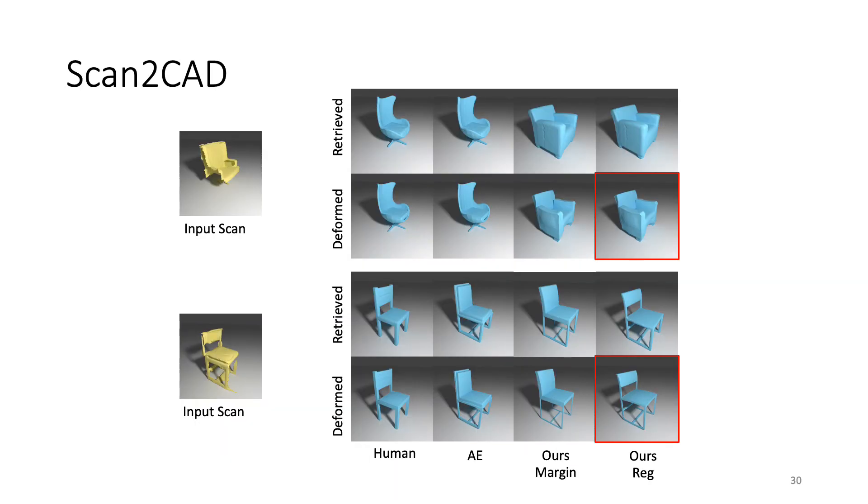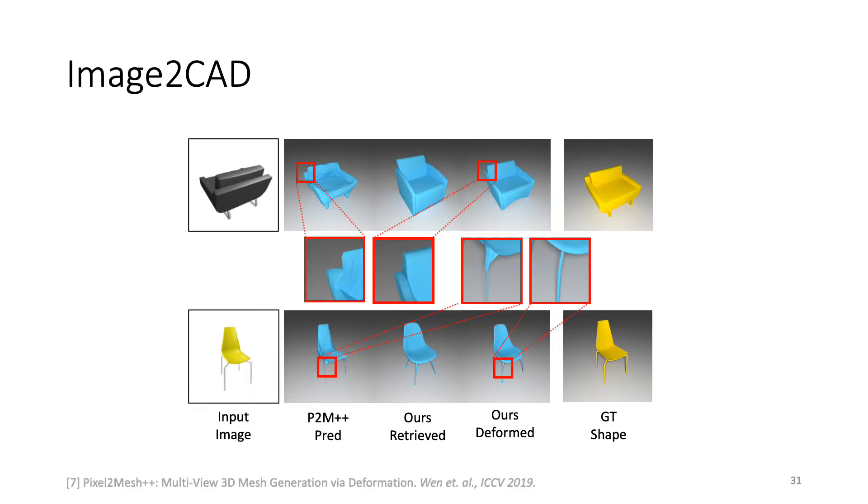As shown, our approach can also be used for the Scan2CAD application, where we retrieve and deform a 3D CAD model to fit a noisy and incomplete scan. We also show some results for the Image2CAD application, where we use Pixel2Mesh++ to predict an initial coarse 3D model that we used as input for our deformation-aware embedding space. We then run our pipeline and achieve a clean, deformed CAD model to fit the image.